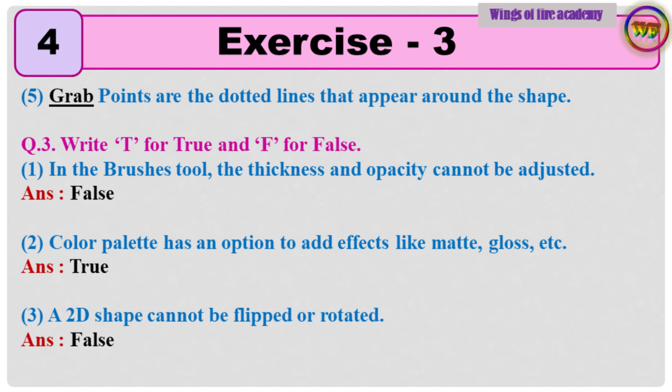Question number 3: Write T for True and F for False. 1. In the Brushes tool, the thickness and opacity cannot be adjusted. Answer: False. 2. Color palette has an option to add effects like matte, gloss, etc. Answer: True. 3. A 2D shape cannot be flipped or rotated. Answer: False.